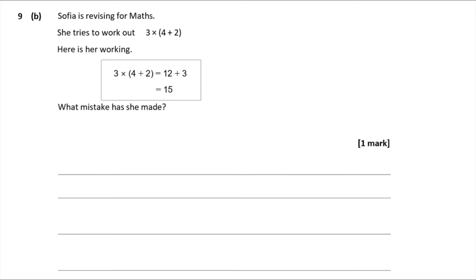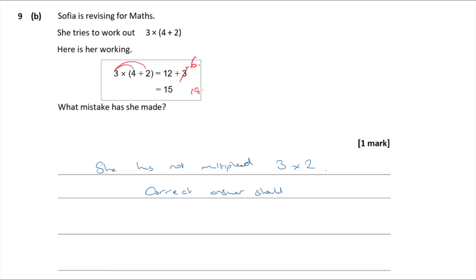Question 9b — Sophia tries to work out 3 × (4 + 2). Her working shows 3 × (4 + 2) = 12 + 3 = 15. What mistake has she made? She multiplied 3 by 4 to get 12, but she also needed to multiply 3 by 2. That should be 6, not 3. So the correct answer is 12 + 6 = 18. She has not multiplied 3 × 2.